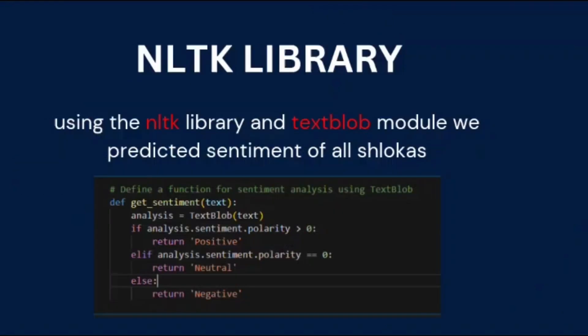After that, we imported the NLTK library — a natural language toolkit — to perform operations on sentences. Using NLTK and the TextBlob module, we predicted the sentiment of all Slokas. We wrote a function that takes an input Sloka and uses TextBlob to calculate its sentiment score. If the score is greater than zero, it is a positive sentiment; if equal to zero, it is neutral; and if less than zero, it is negative.